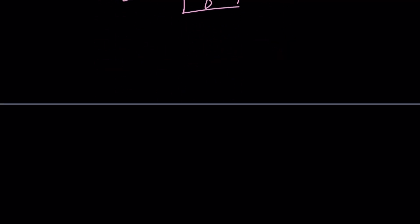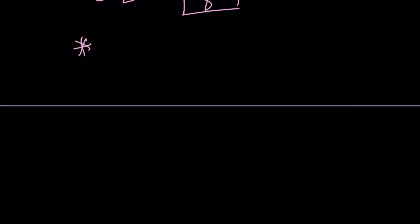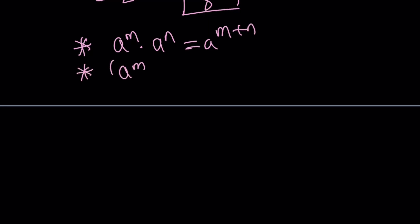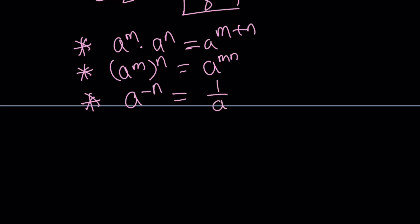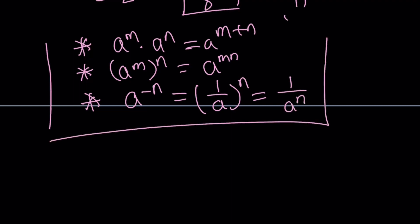Let's summarize the properties we used. The first property was: a to the m times a to the n equals a to the power m plus n. The second was the power of a power: a to the m, to the power n, equals a to the power mn. And the third property was the negative exponent: a to the power negative n can be written as 1 over a to the power n.